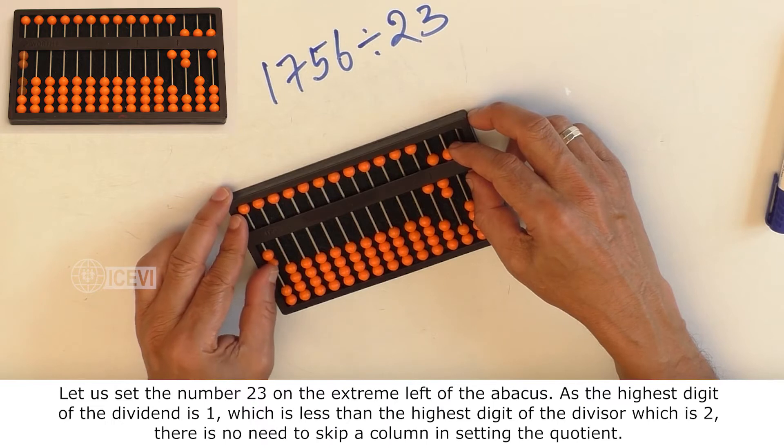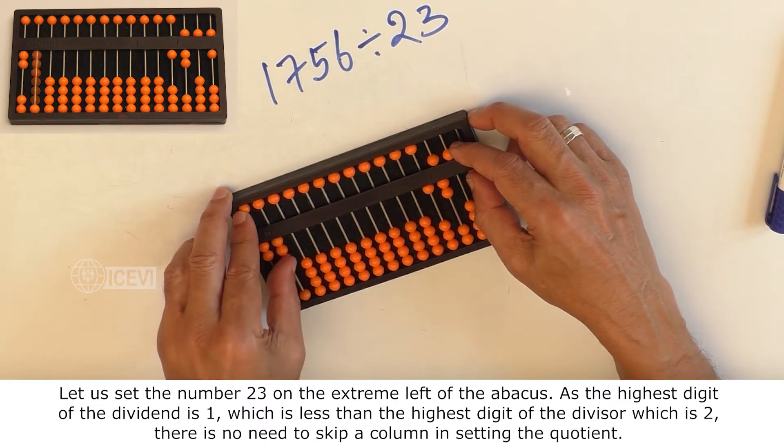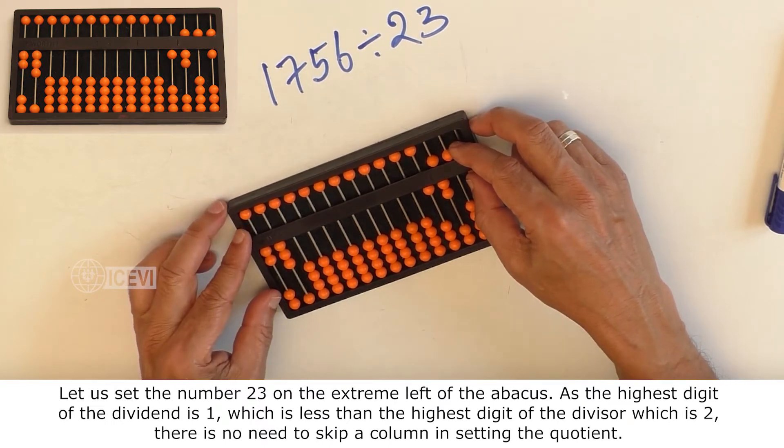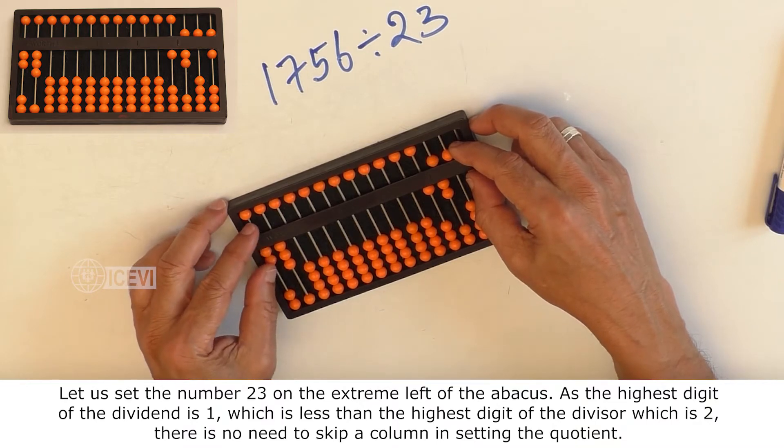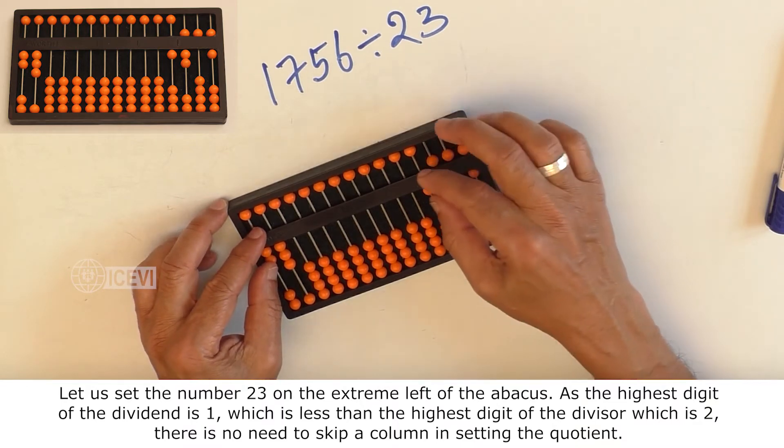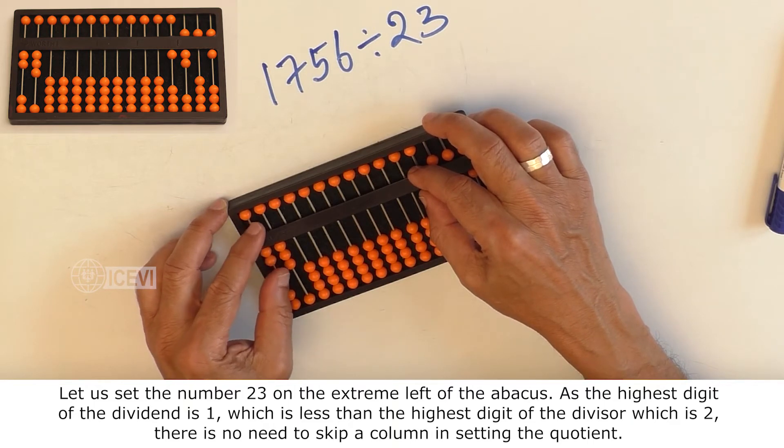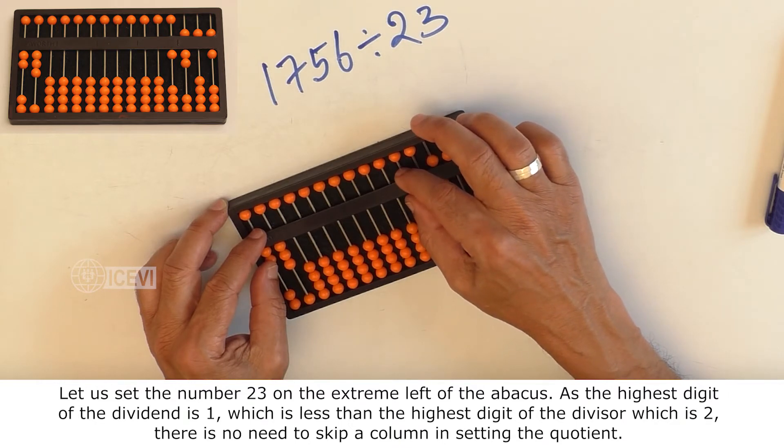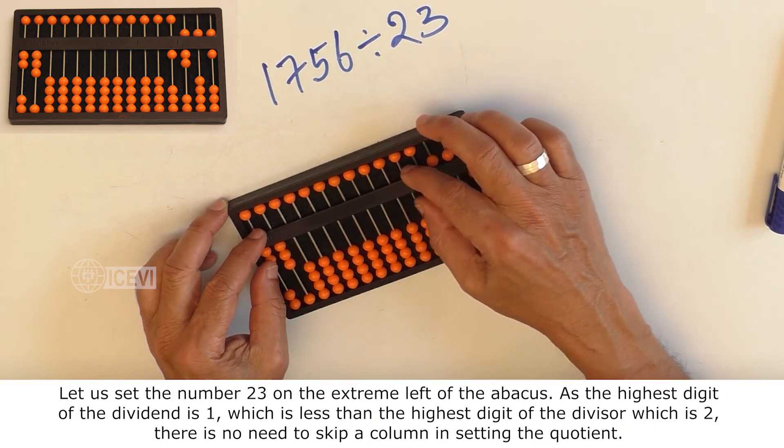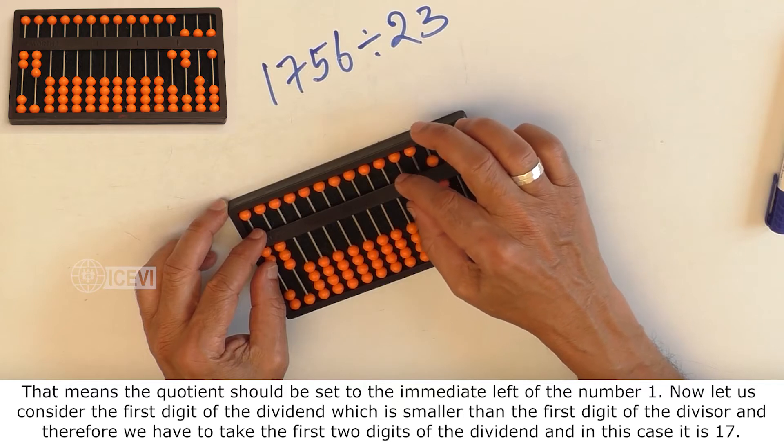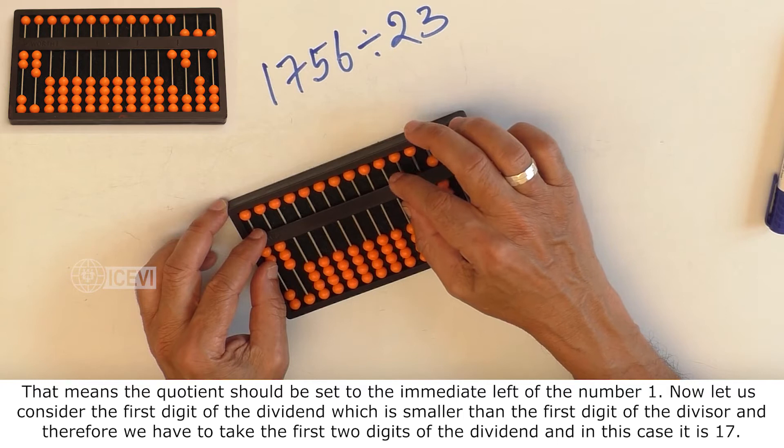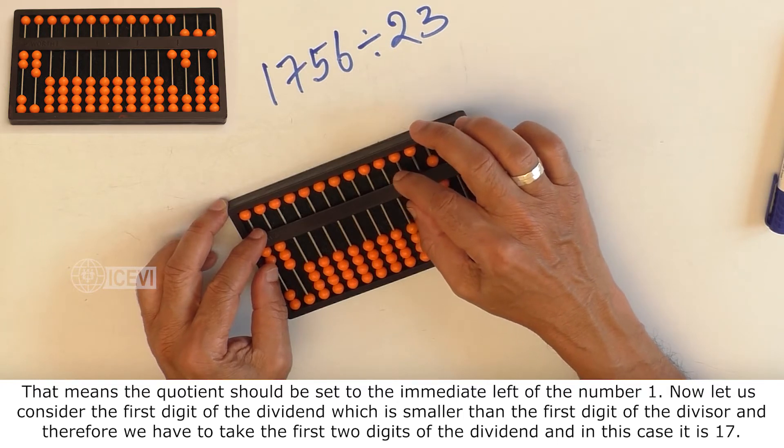Let us set the number 23 on the extreme left of the Abacus. As the highest digit of the dividend is 1, which is less than the highest digit of the divisor which is 2, there is no need to skip a column in setting the quotient. That means the quotient should be set to the immediate left of the number 1.